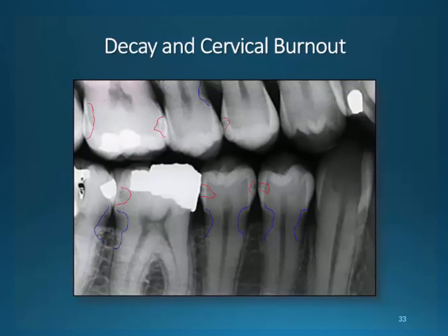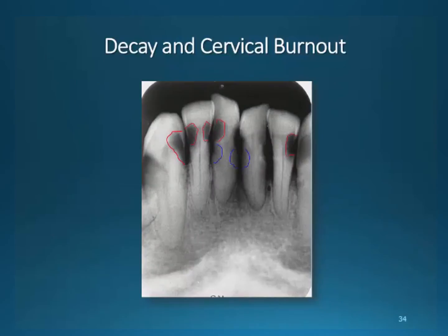Let's take a look at decay and cervical burnout and compare the two. Red areas are decay; blue areas are cervical burnout. We have both rampant decay and cervical burnout in this slide. I have circled the areas in red that are decay and circled the areas in blue that are cervical burnout. There is obviously a great deal of decay, and it is much harder to detect cervical burnout in situations like this. Without a visual exam, we cannot be totally certain that what I have outlined in blue is not the beginning of some area of decay.